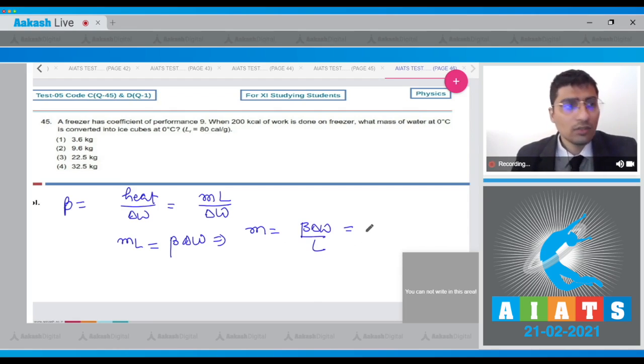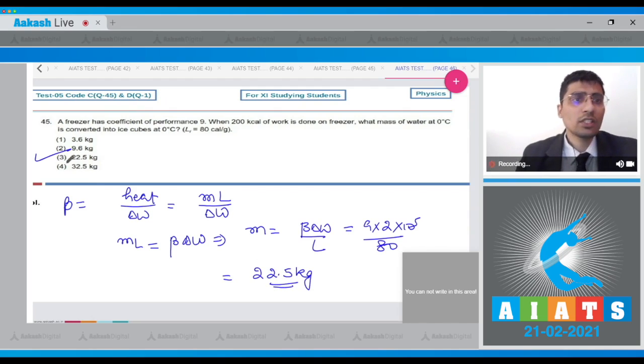Putting the values, this will equal 9 times 2 times 10⁵ by 80, which will equal 22.5 kg. And hence for this question, the correct answer is option 3.